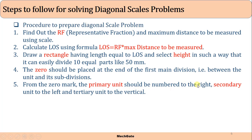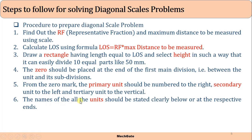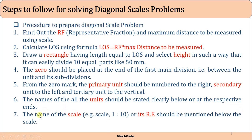Next, place zero at the end of the first main division between the unit and its subdivision. From the zero mark, the primary unit should be numbered to the right and the secondary unit to the left. The names of all units should be stated clearly below or at the respective ends, and the name of the scale or its RF should be mentioned below the scale.